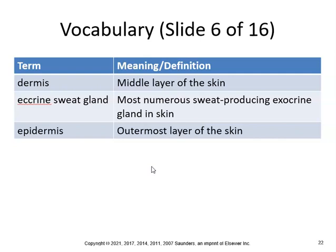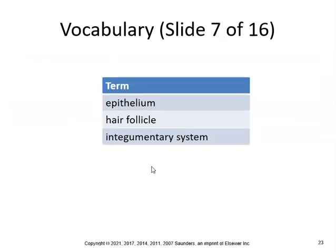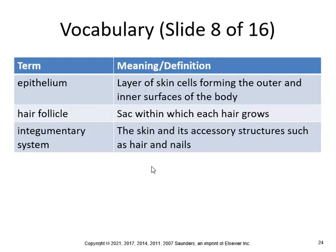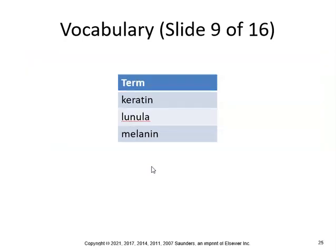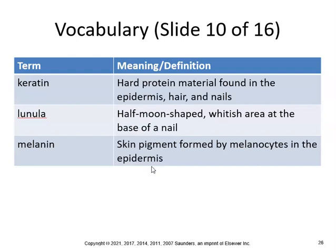The epidermis is the outermost layer of the skin — you get a brand new epidermis every 28 days. Epithelium is the layer of skin cells forming the outer and inner surfaces of the body. The hair follicle is the sac within which each hair grows. The integumentary system is the skin and its accessory structures such as hair and nails. Keratin is the hard protein found in the epidermis, hair, and nails — make sure you know how to spell keratin. Lunula is the half-moon-shaped whitish area at the base of the nail. Melanin is the skin pigment formed by melanocytes in the epidermis.